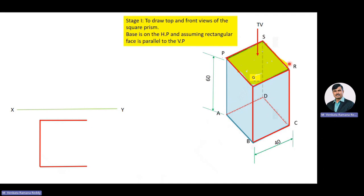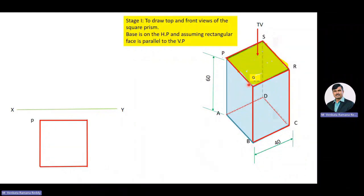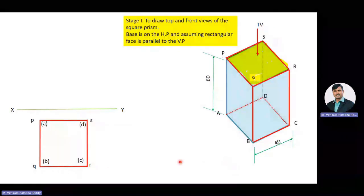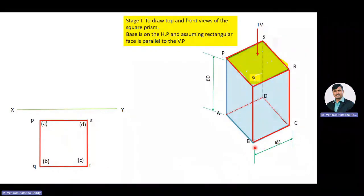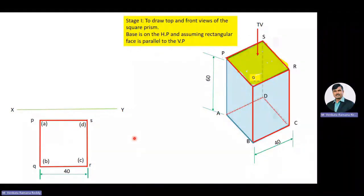In the top view, the top base PQRS is visible, whereas the bottom base ABCD is invisible. The base side length of the square prism is 40 mm. Then we locate the center of the base, which is also the image of the axis, say OO1.